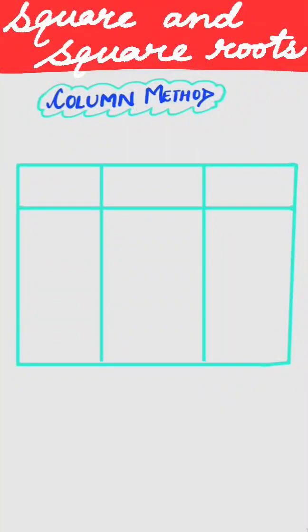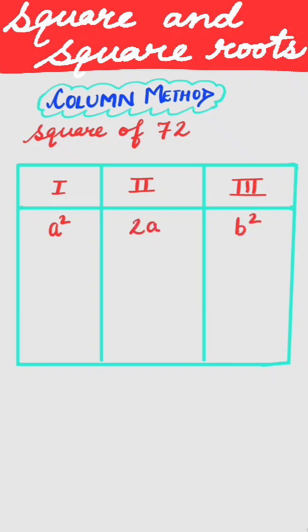Today we will find the square of 72 by column method. We divide it into three columns: one, two, and three. We know the identity (a + b)² equals a² + b² + 2ab.